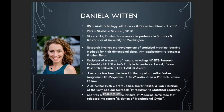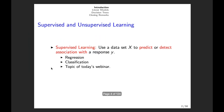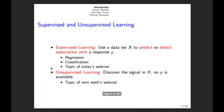Thanks so much for the introduction. Today I'm going to talk about supervised machine learning. Machine learning basically falls into two camps: supervised learning and also unsupervised learning. The idea behind supervised learning is that we use a dataset X to predict or to detect an association with the response Y. Examples of supervised learning include regression, where we're trying to predict a quantitative response, and classification, where we're trying to predict a categorical response.